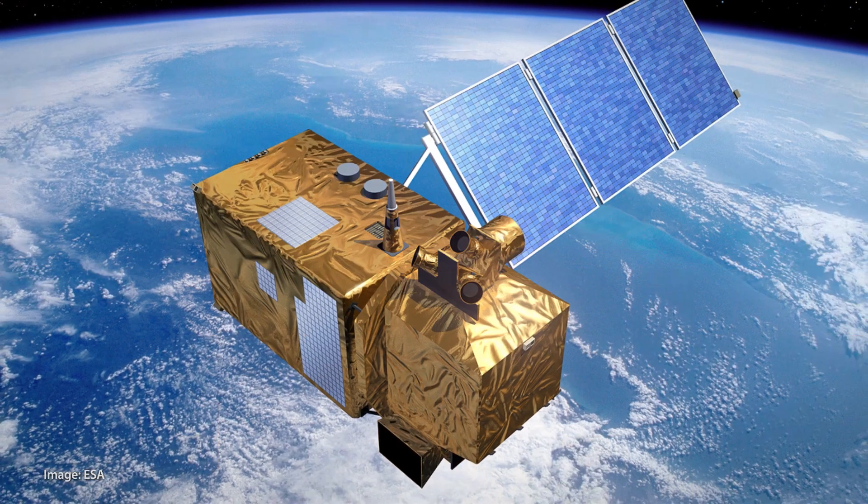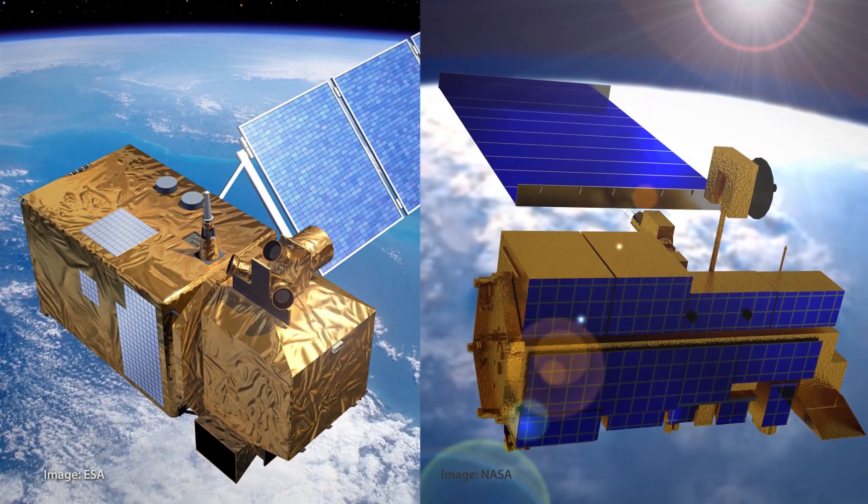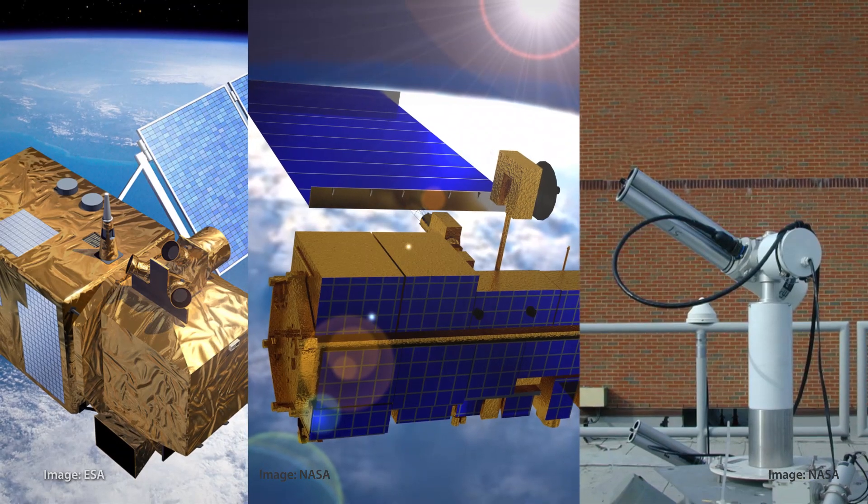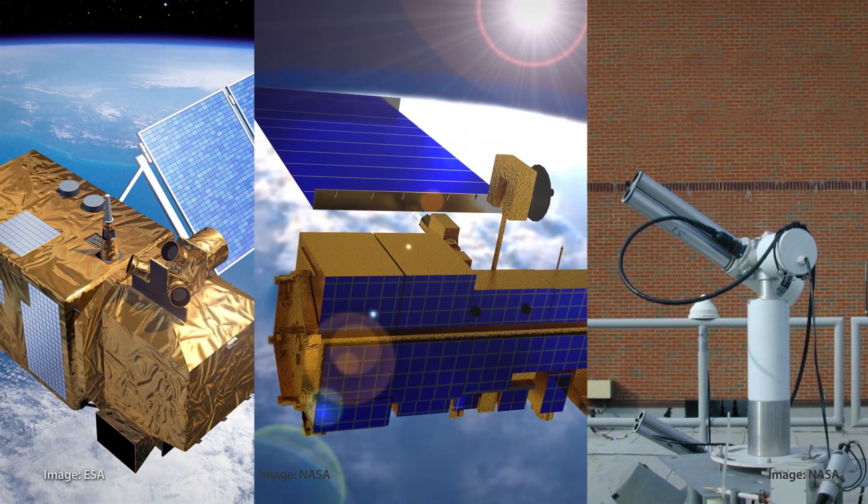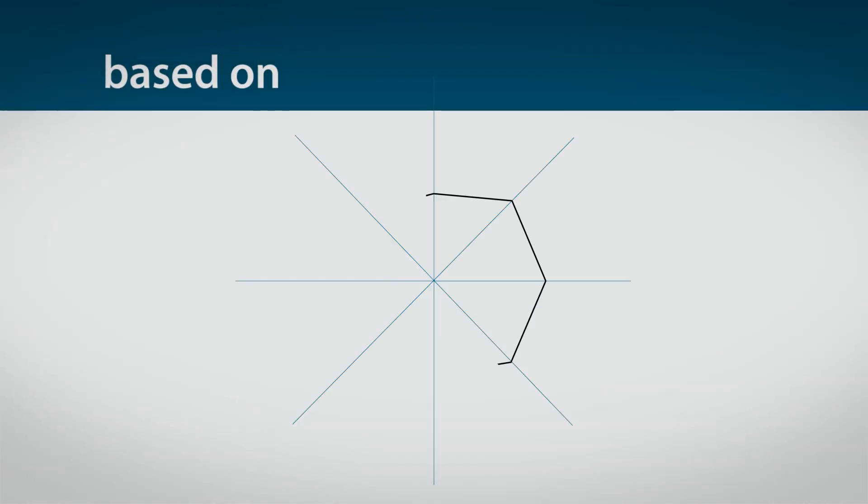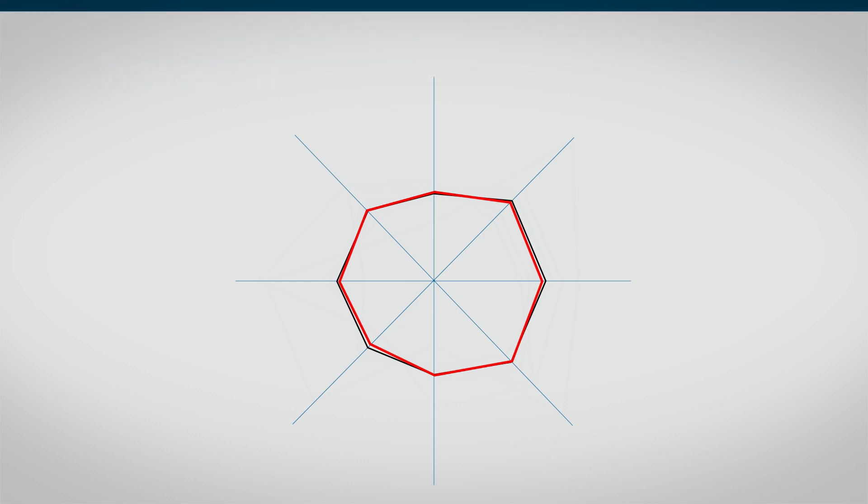GRASP is a highly versatile algorithm that allows input from a wide variety of satellite and surface measurements. In order to achieve high accuracy, GRASP is based on a highly optimized numerical fitting procedure and a detailed model of atmosphere, aerosol, and surfaces.